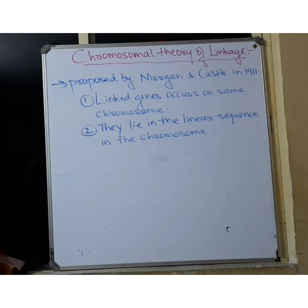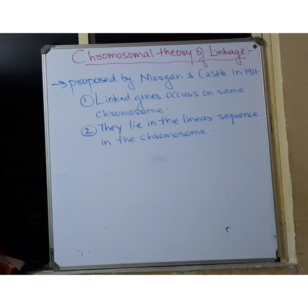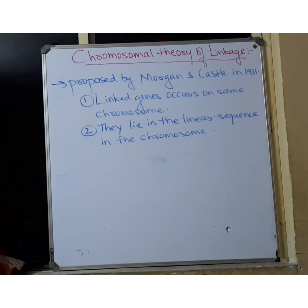Second point: genes are arranged in a specific position on the chromosome. Just as in your house there is a specific room for specific activities, genes have specific arrangements on chromosomes — they are arranged in a linear sequence, one straight line, on the chromosome.